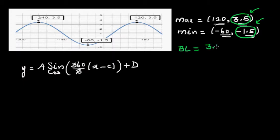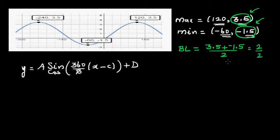The baseline is the average of the y-coordinate of the maximum and the y-coordinate of the minimum. So baseline equals (3.5 + (−1.5)) ÷ 2, which is 2 ÷ 2, so the baseline is 1.